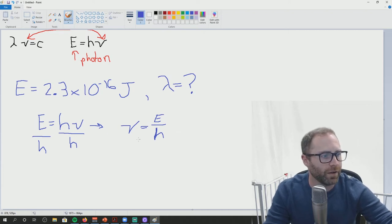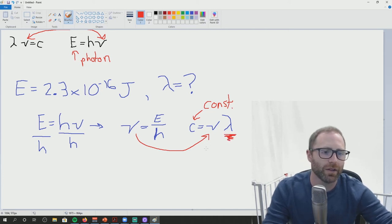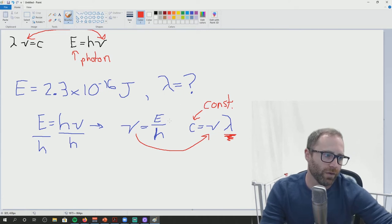From there, we can plug this into our C equals nu times lambda. And since we always know the speed of light, that's a constant, we then can figure out our wavelength. So that's like one way we could solve that problem.